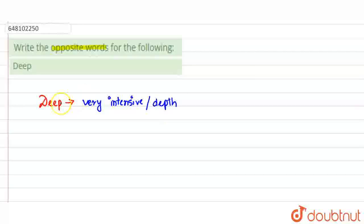So now we have to find the opposite word. The opposite of deep would be your shallow. The opposite of deep, that would be your shallow.